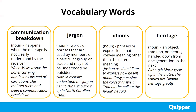Let me introduce the different vocabulary words we are going to encounter in our discussion. First, we have communication breakdown. Communication breakdown happens when the message is not clearly understood by the receiver — the problem is not with the receiver but in how the receiver interprets the message. For example, when Melissa saw the florist carrying dandelions instead of carnations, she realized there had been a communication breakdown. Carnations and dandelions are types of flowers.